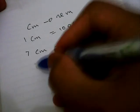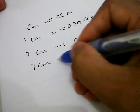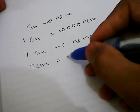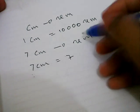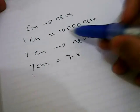The first thing you need to do is write down seven centimeters again, give an equal sign, and multiply this seven with ten thousand.